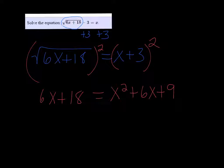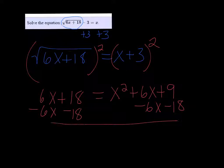Since we're looking at a quadratic here, we want to set one side equal to 0. So I'm going to subtract 6x and subtract 18. I get 0 on the left, and on the right, x squared minus 9.